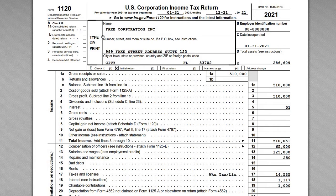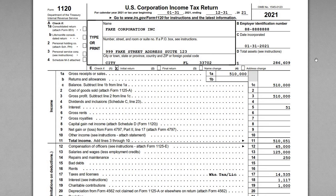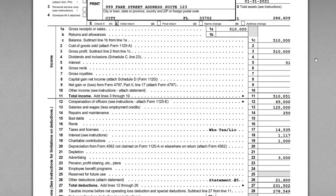We have a newly formed corporation here, formed in Florida on January 31st, 2021. This is an initial year return, marked accordingly, and it's for a short period — the entity wasn't set up all year; it was launched on January 31st and runs through the end of the calendar year. We have the company name, EIN, the date the entity was set up, and on page one the various income and expense items.